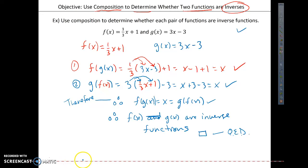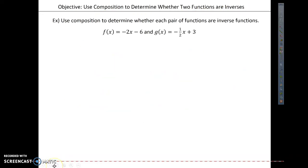I'm going to go ahead and I'm going to do another example here. And let me write my functions. f of x is equal to negative 2x minus 6. And again, here, we're using composition to determine whether the functions are inverses. And I have g of x, which is equal to negative 1 half x plus 3.